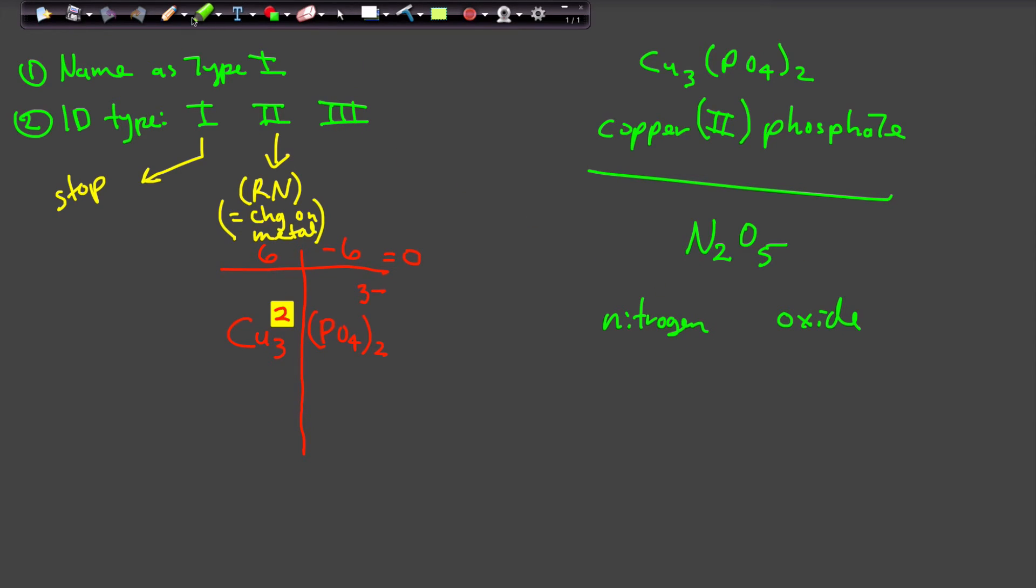If it's a Type 3, what is your rule? It has nothing to do whatsoever with Roman numerals, but you do have to modify the Type 1 name that you've already done, and you do that by using a prefix.